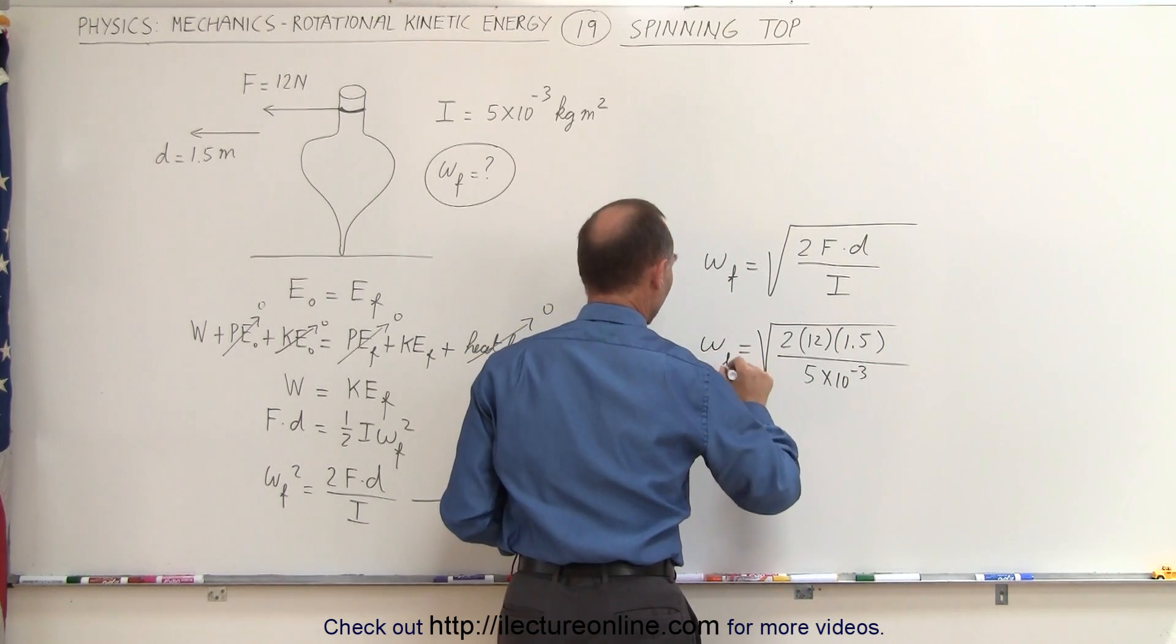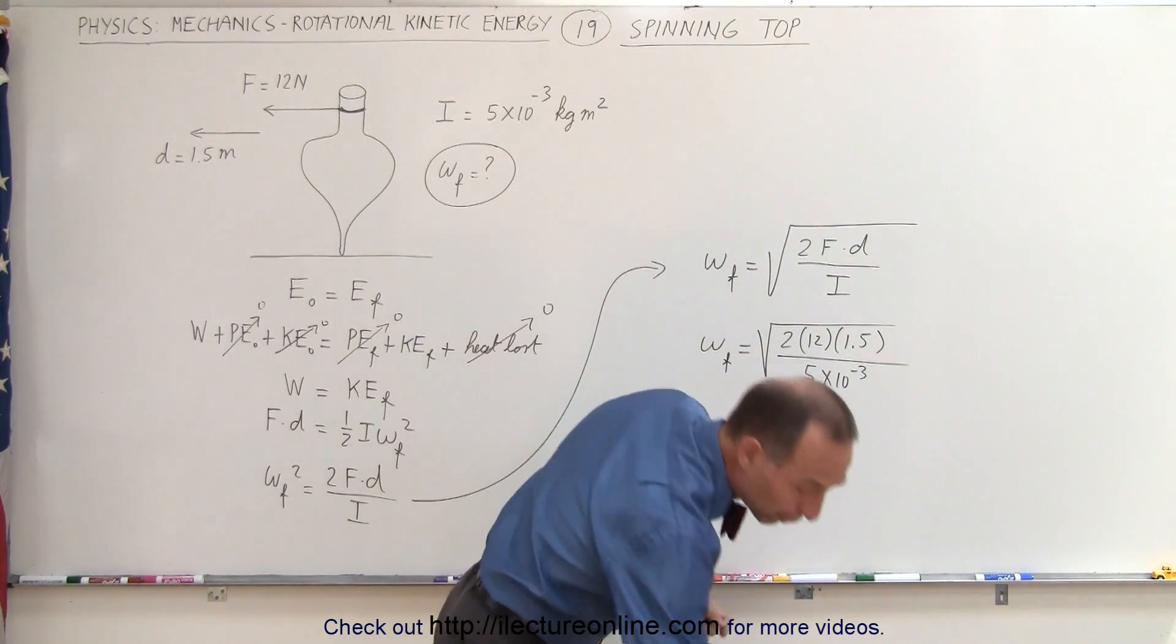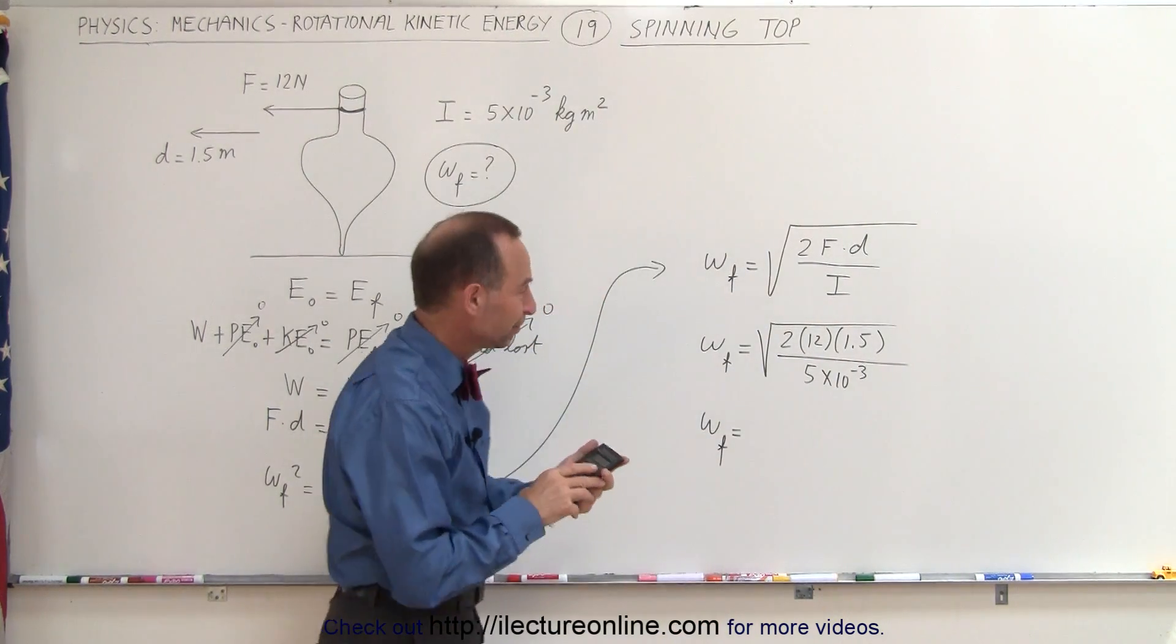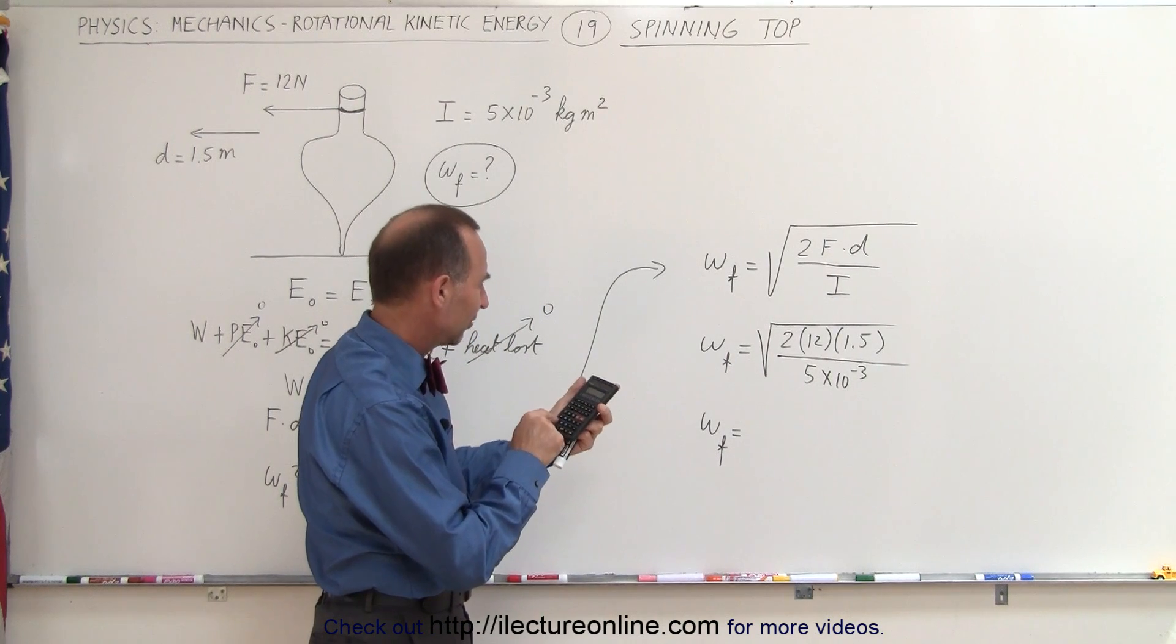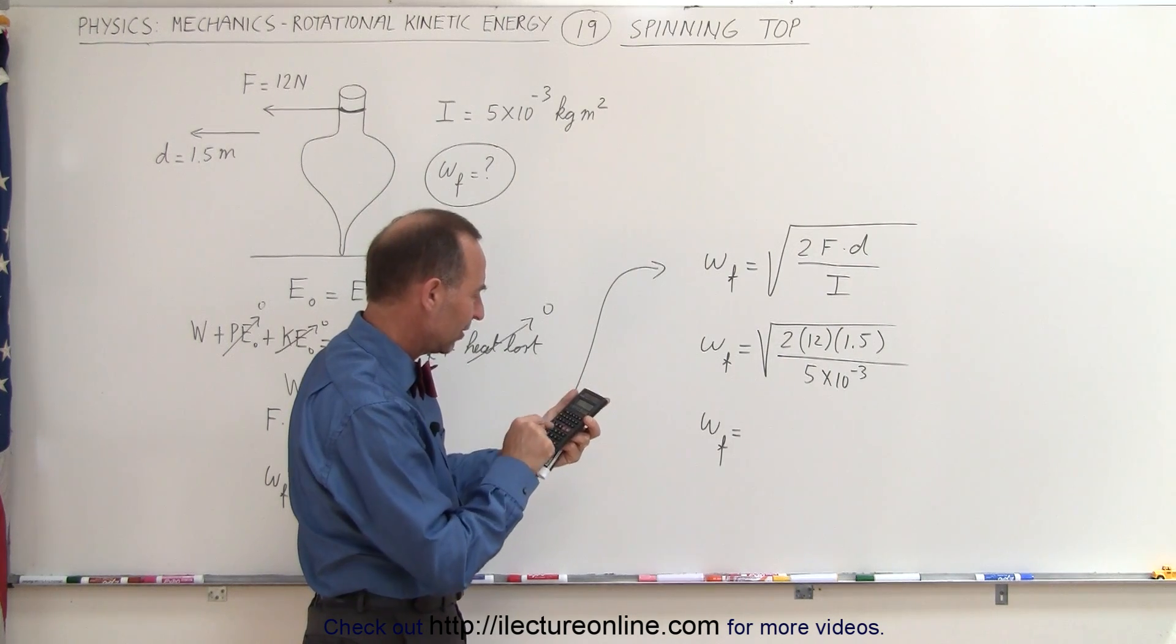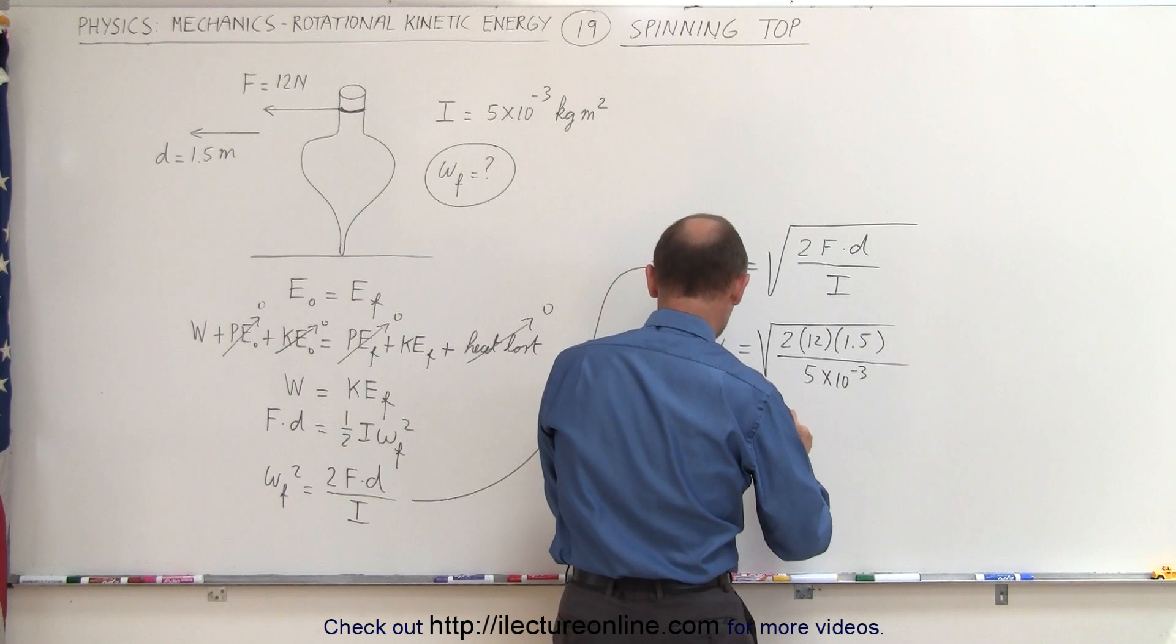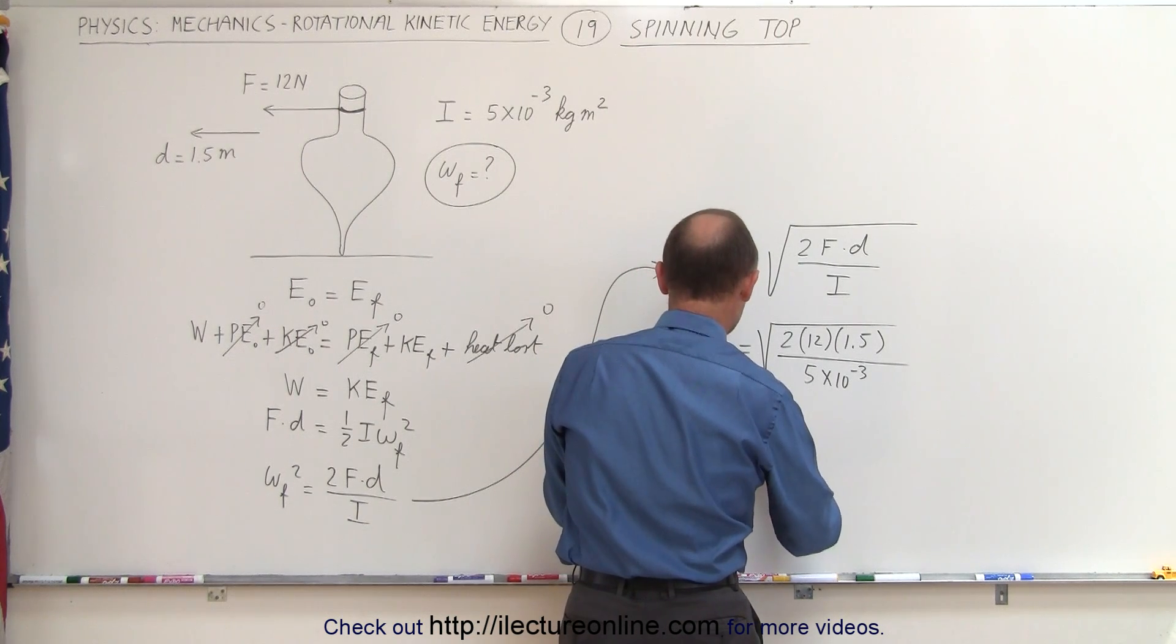That's 2 times 12 times 1.5 divided by 5e to the 3 minus, and now you take the square root of that. And the rotational velocity, the angular velocity, will be 84.9.